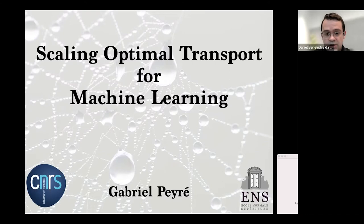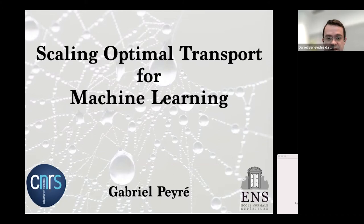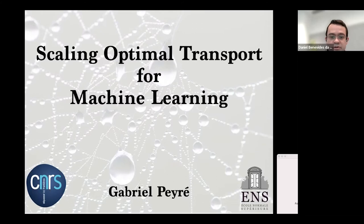He received the Silver Medal from CNRS in 2021, and was an invited speaker at the European Congress for Mathematics in 2020. He is deputy director of the Pryor Institute for Artificial Intelligence, director of the ENS Center for Data Science, former director of the GDR CNRS MIE, and currently the head of the European Lab for Learning and Intelligent Systems in Paris. Dr. Gabriel Peyré, thank you very much for your time and availability to give this talk. The floor is yours.